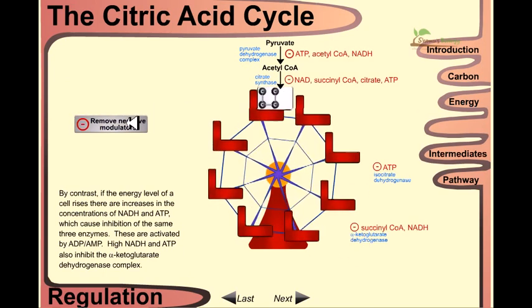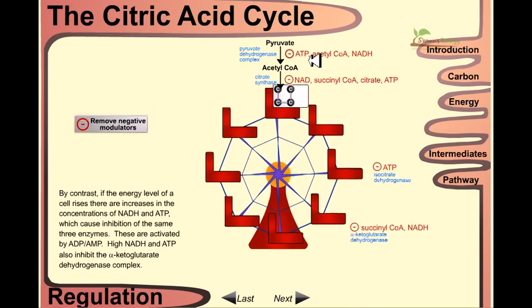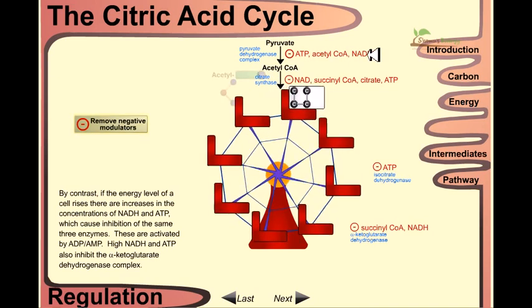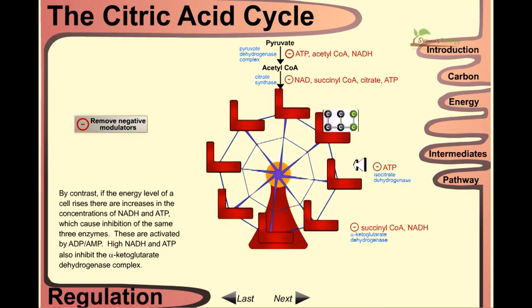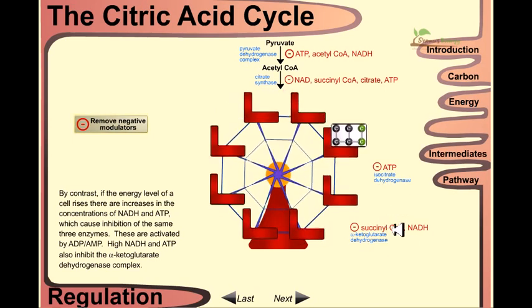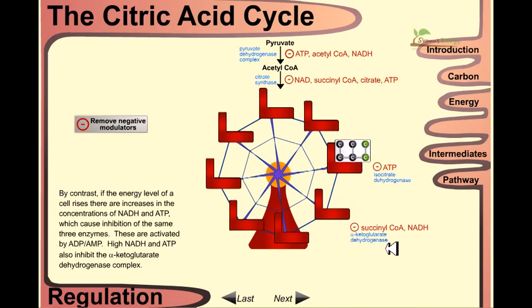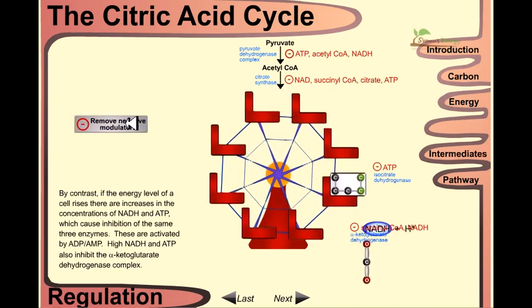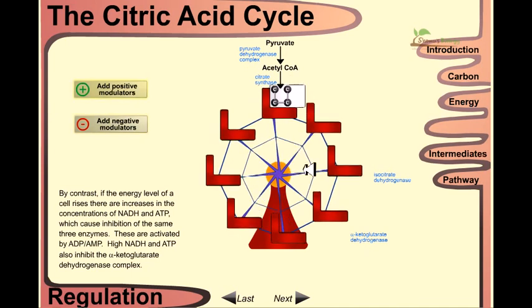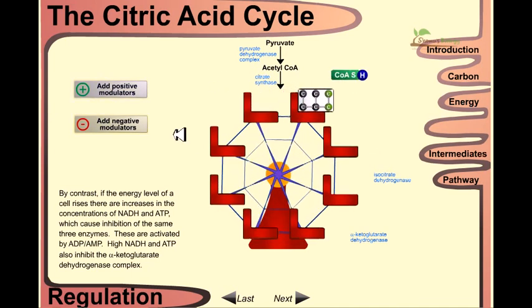If we add the negative modulators, you can see ATP, acetyl CoA, or NADH is acting as a negative modulator. It will slow this reaction further down. Succinyl CoA is also acting as the negative modulator for this step. If we remove this negative modulator, it backs to the normal conformation.